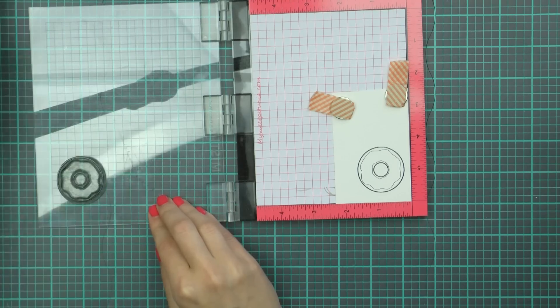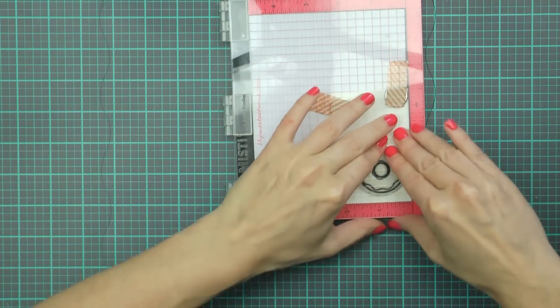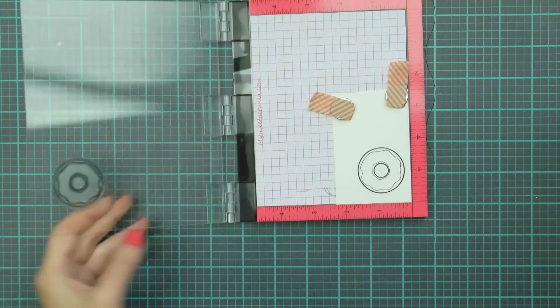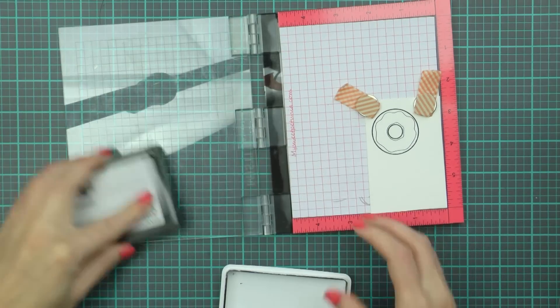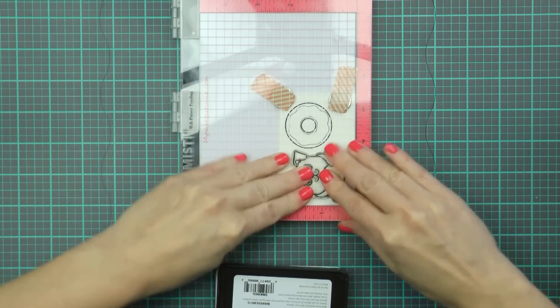I'm going to triple stamp this image just so that I have a nice and crisp impression and I'm also going to stamp a fun little puppy from the cuddly critter stamp set again using the same ink and double stamping him onto the watercolor paper.